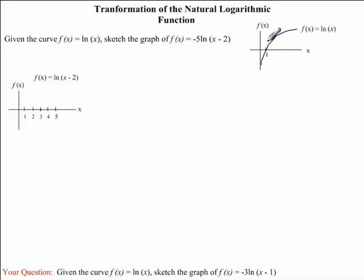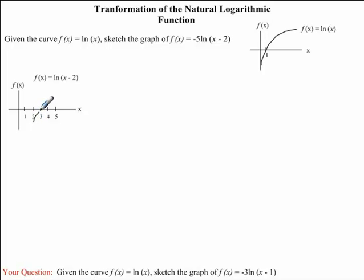We also notice that in the graph of ln of x, we had a vertical asymptote of x equals 0. So now if we were to shift this graph 2 units to the right, our new vertical asymptote would occur when x is equal to 2, right here. So our new graph would look something similar to this — we have a vertical asymptote at x equals 2, we pass through the point (3, 0), and since we're dealing with a natural logarithmic function, we have a very similar shape. All we did was shift the previous graph 2 units to the right.